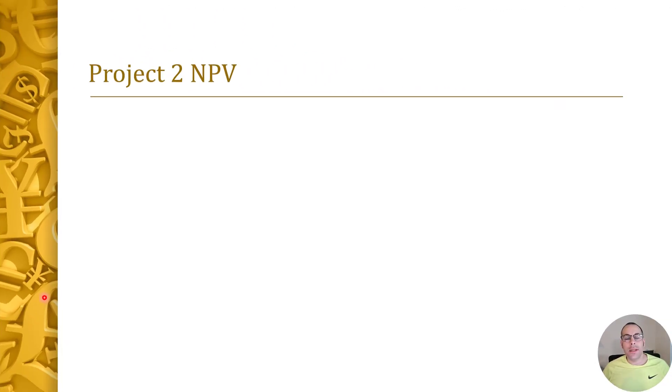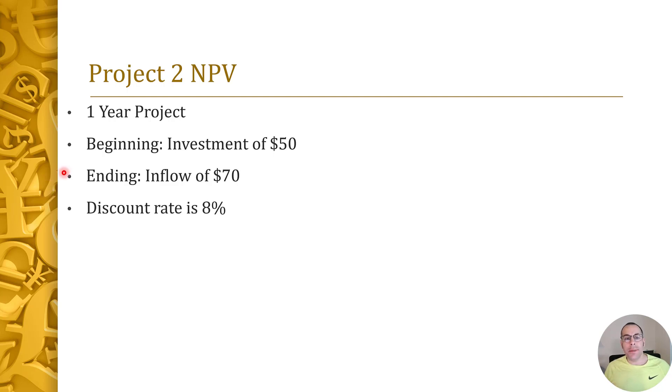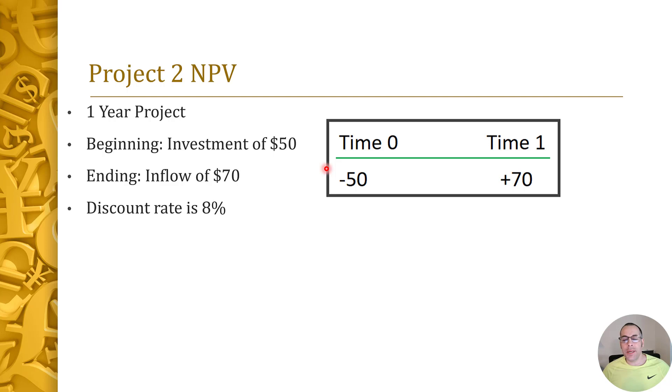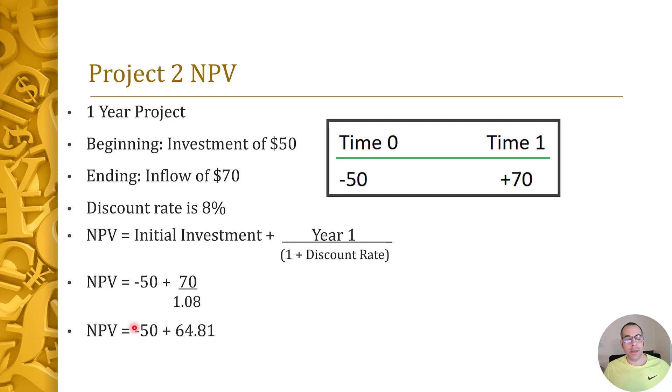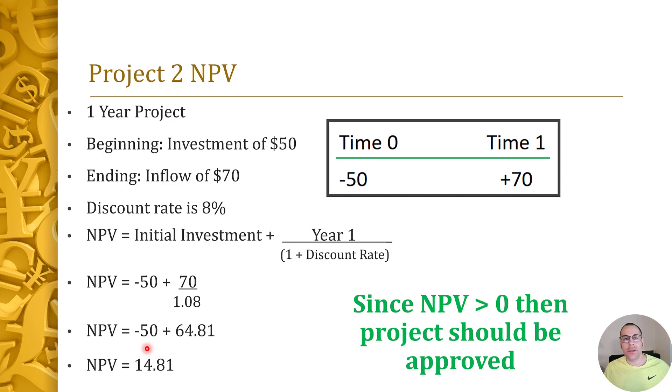Some companies have more than one project to look at. Let's look at a second project we're offered. We're going to calculate the NPV. It's also a one-year project. The beginning investment is $50 and we receive $70 at the end of one year. Our discount rate is also eight percent. Here's a visual: $50 investment, at the end of one year we receive $70. Once again, the formula for NPV: we plug in our inputs, negative 50 plus 70 over 1.08, which is negative 50 plus 64.81. This gives us an NPV of 14.81, so we would approve the project because it's greater than zero.